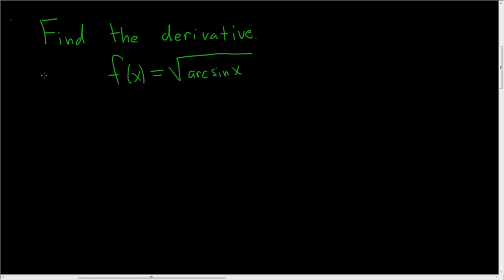We're being asked to find the derivative of the square root of arc sine x solution. So before we do the problem, just recall that the derivative of arc sine x is equal to 1 over the square root of 1 minus x squared.